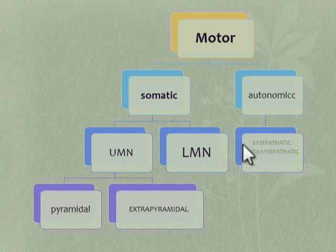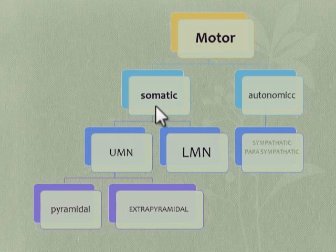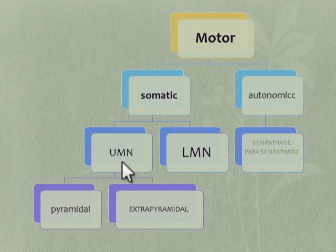Autonomic nerves control involuntary activity of internal organs. Autonomic nerves, especially sympathetic and parasympathetic functions, are very rarely deranged in motor neuron disease. Mostly, the derangement in motor neuron disease mainly occurs in somatic neurons — that is, upper motor neuron and lower motor neuron.